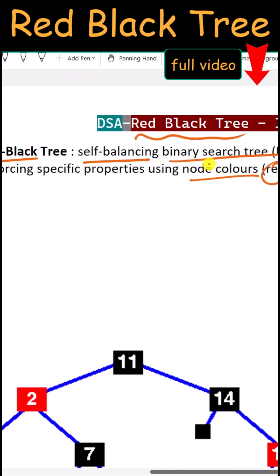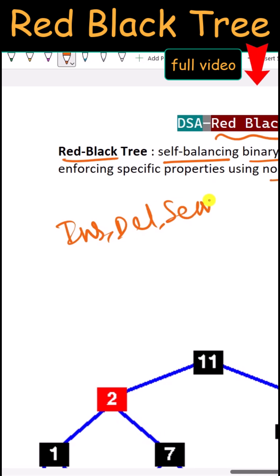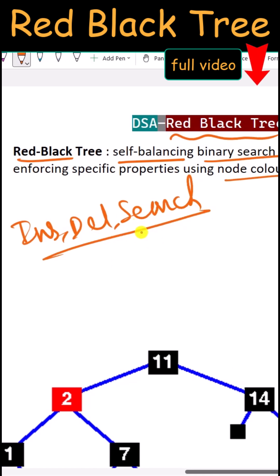Because the tree is balanced, if we perform insertion, deletion, or even search operations, all of these will be really efficient. We can do all of these operations in O(log n) complexity.